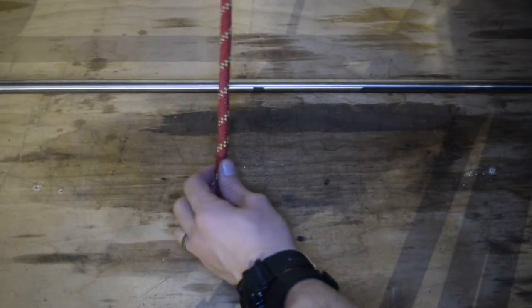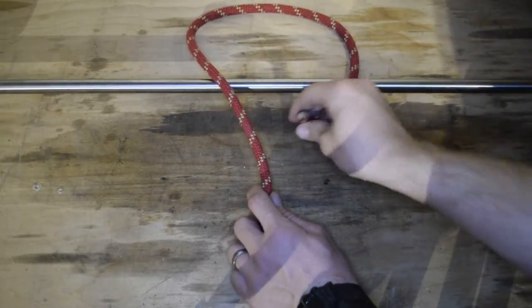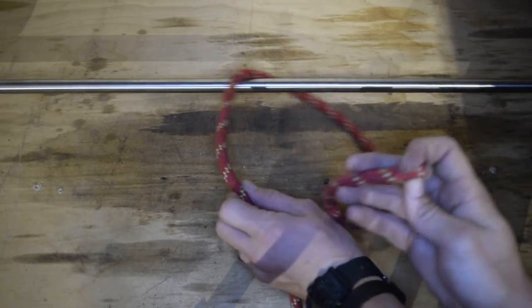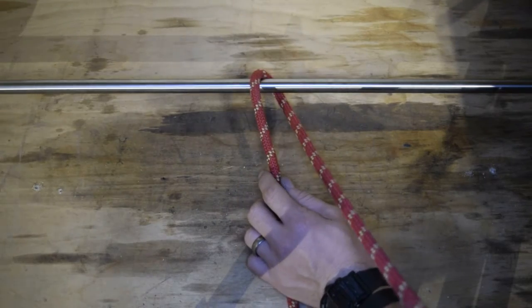But we have a clove hitch, so you're going to start with wrapping around your horizontal bar. Pull it to one side, it can either be on the left or on the right. But you want it on one side.